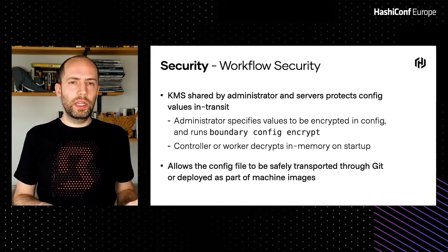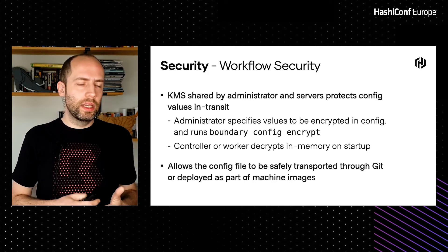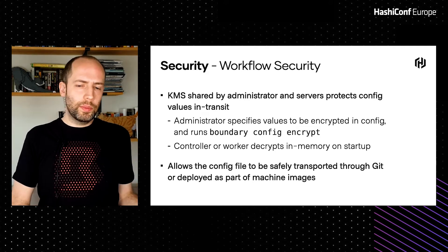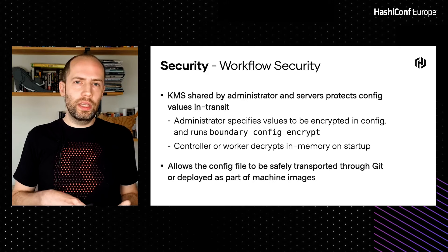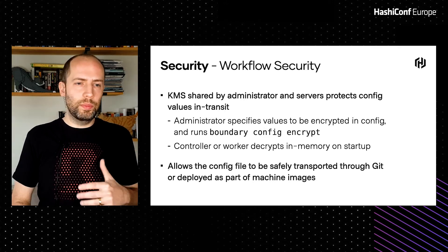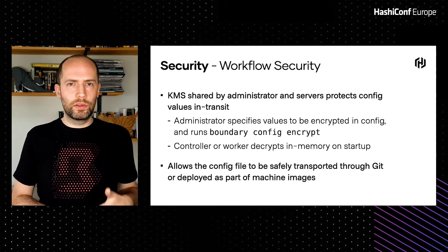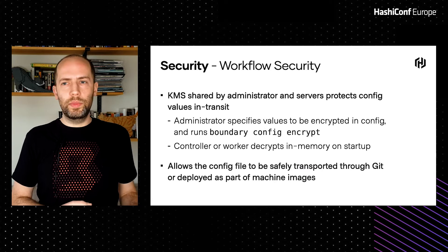As a final example for security, we even looked at things down to workflows. One way this plays out in Boundary is that one of the KMSs you can define can be shared by both an operator and the system itself. The operator can encrypt passwords, API keys, or other values in Boundary's config files, which allows them to be safely stored in Git, CI systems, AMIs, containers, or lambdas — as long as the end system can access that same KMS for decryption at runtime. We tried to make it easier to be secure but still simple for operators looking at workflows.